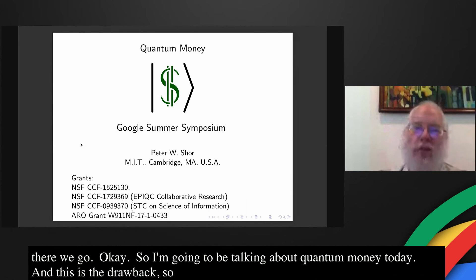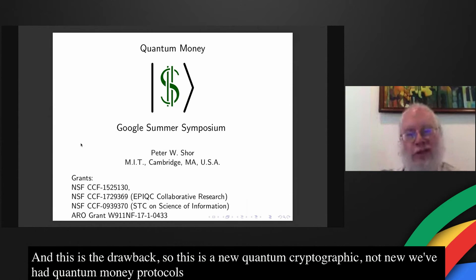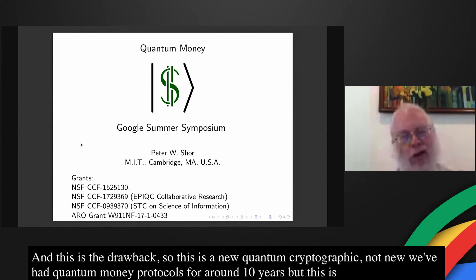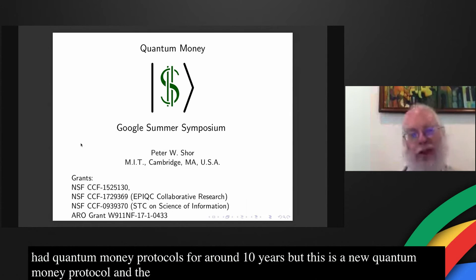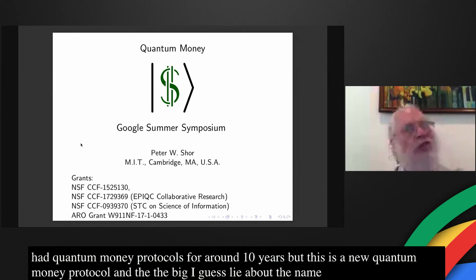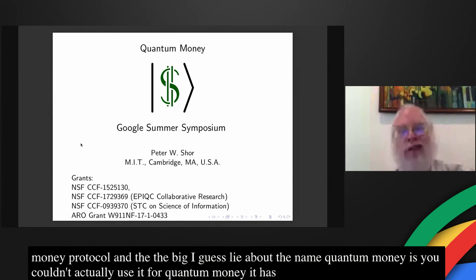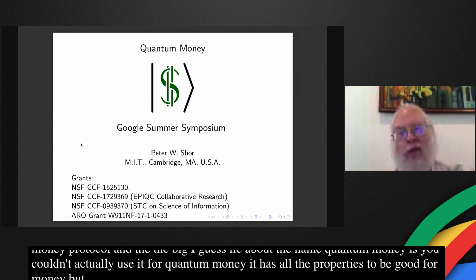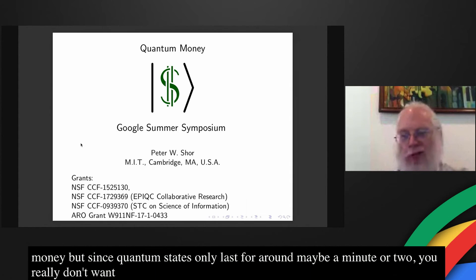So this is a new quantum cryptographic protocol. Well, not new — we've had quantum money protocols for around 10 years, but this is a new quantum money protocol. And the big lie about the name quantum money is you couldn't actually use it for quantum money. It has all the properties to be good for money, but since quantum states only last for around maybe a minute or two, you really don't want quantum money because you don't want your money to disappear after two or three minutes.